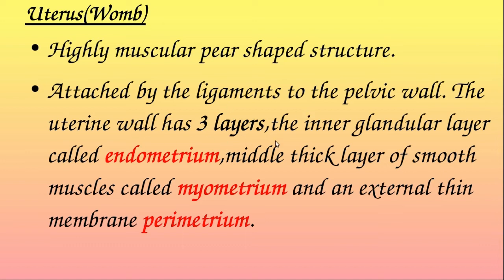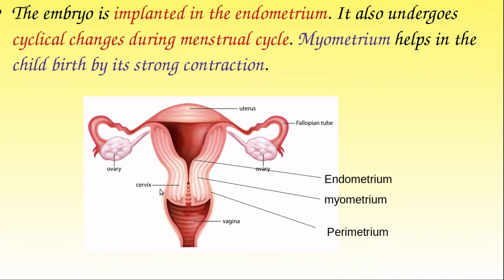The uterine wall has three layers. The innermost is the endometrium — a glandular layer. The middle layer is the myometrium, a thick layer of smooth muscles. The outermost layer is the perimetrium, a thin external membrane covering the uterus.